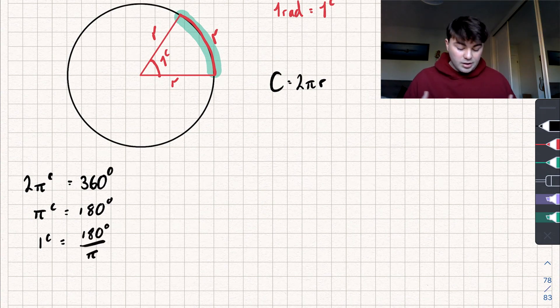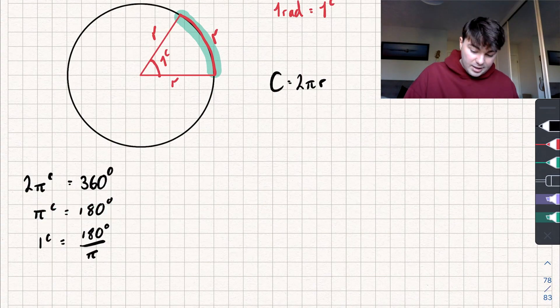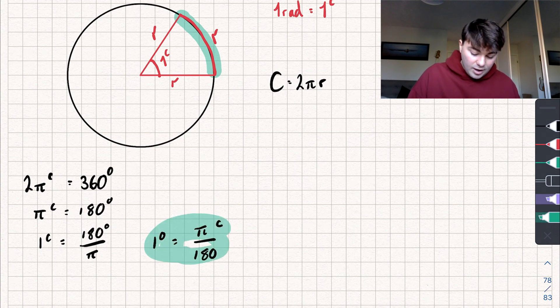Now I want to also say what is one degree equal to, and I get that by dividing this part by 180, similar to what I did before. We get that one degree is going to be equal to π radians divided by 180.